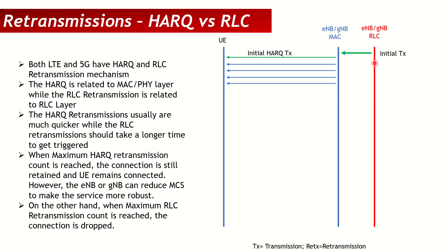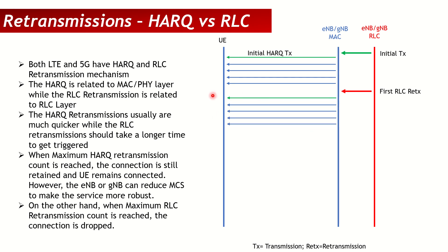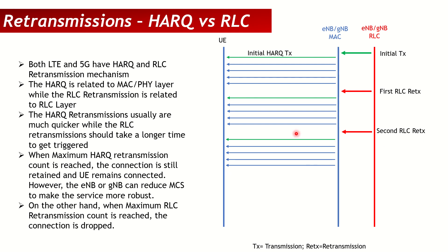Because the packet was not transmitted successfully, the eNodeB's or gNodeB's RLC layer will initiate the first RLC retransmission. RLC retransmissions are configured so that they only get triggered once all the HARQ transmissions have failed — based on timer values, but that is how most vendors implement it, because it would not make sense to trigger an RLC retransmission when HARQ has not been fully utilized. Once the first RLC retransmission is sent, the packet is passed to the MAC layer, which tries again to send it over the air.